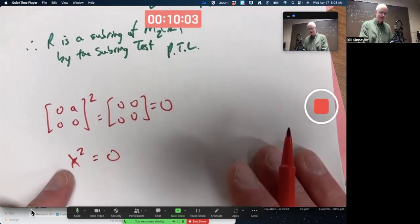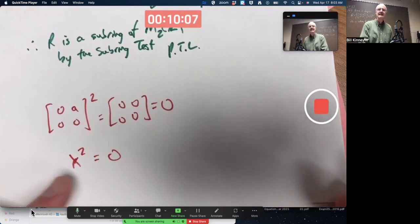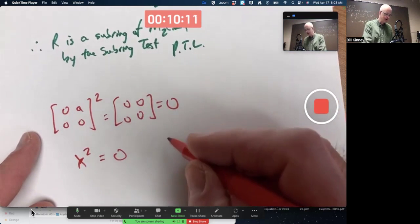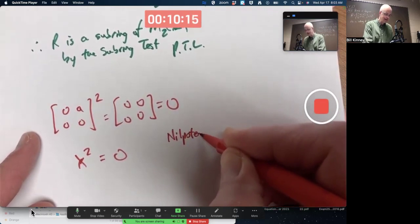Any ring element whose square or whose cube or whose fourth power is 0 actually has a special name. It's called a nilpotent element. Nilpotent element.